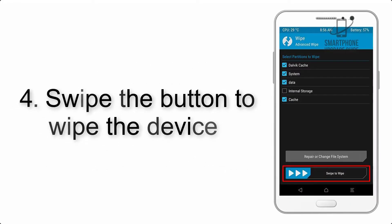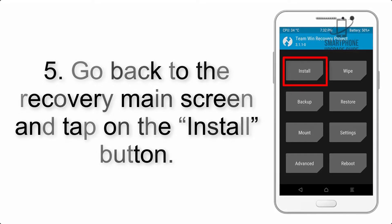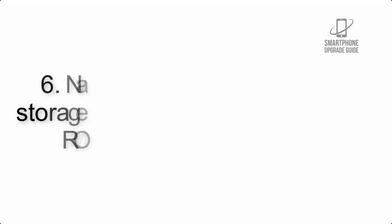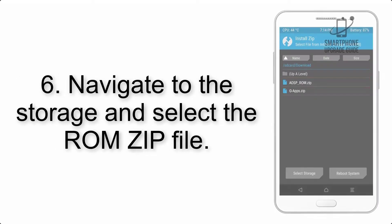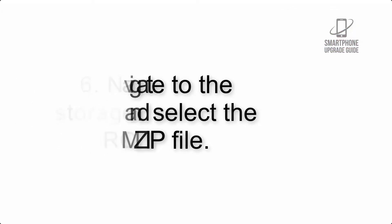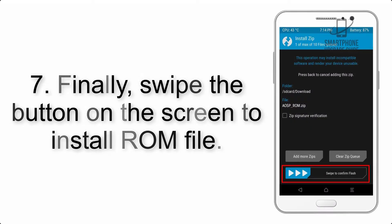Step 4: Swipe the button to wipe the device. Step 5: Go back to the recovery main screen and tap on the Install button. Step 6: Navigate to the storage and select the ROM zip file.